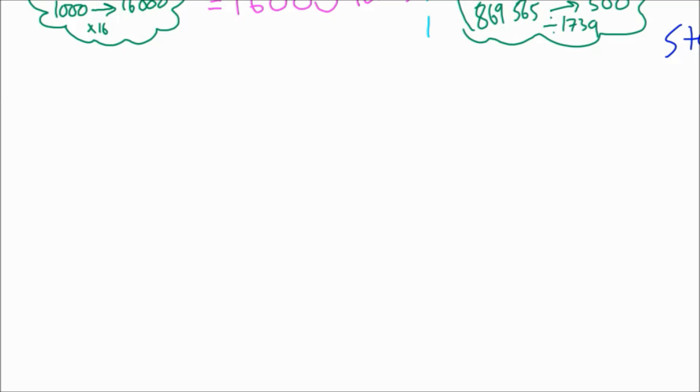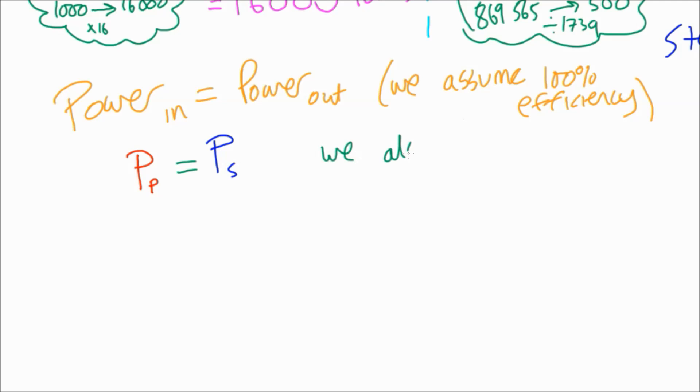The other thing we're going to need to talk about is power. We assume that transformers are really quite efficient, so we assume them to be 100% efficient, which means the power in equals the power out, or the power in the primary equals the power in the secondary. We also know that P equals IV.